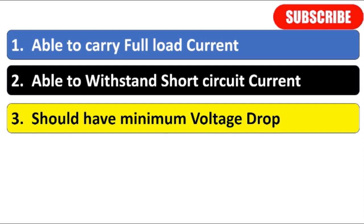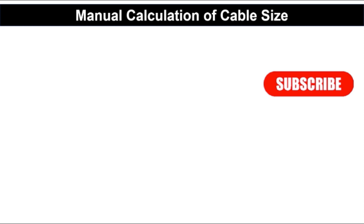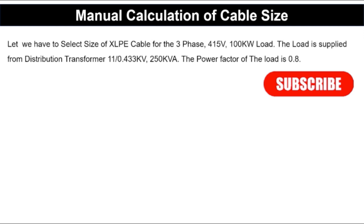To learn cable size calculation, we have taken an example. We have to select the size of an XLPE cable for a three-phase, 415 V, 100 kW load. The load is supplied from a distribution transformer rated 11/0.433 kV, 250 kVA. The power factor of the load is 0.8. First, we will calculate the load current.